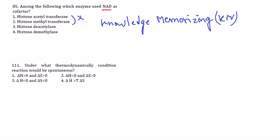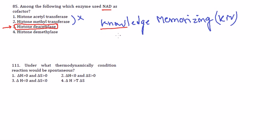To solve this, we know that transferase enzymes normally don't require NAD as a cofactor, so we can exclude those options. What remains are histone demethylase and histone deacetylase. Whenever we talk about acetylase and deacetylase reactions, those are obviously involved in NAD transfer and use of NAD as a cofactor. So histone deacetylase requires NAD as a cofactor, and the correct answer is option C, histone deacetylase.